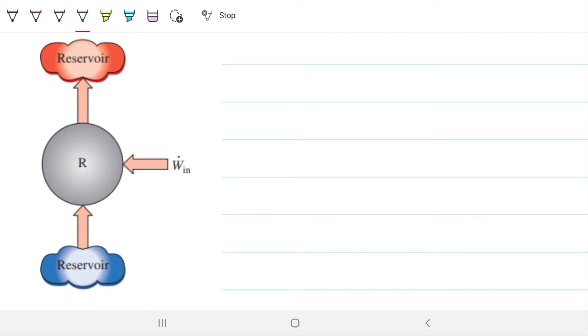We're again looking at a refrigerator. R stands for refrigerator, and on the last video we talked about how the coefficient of performance or the efficiency of the refrigerator is defined the same way as an efficiency for a heat engine, right?